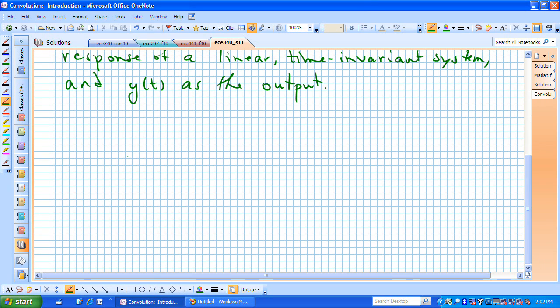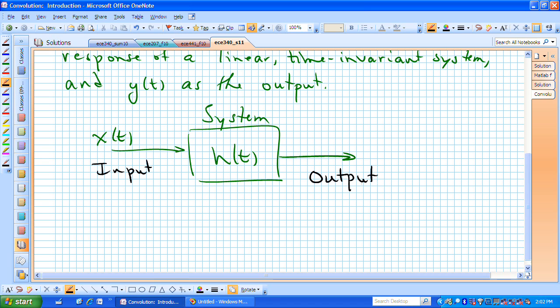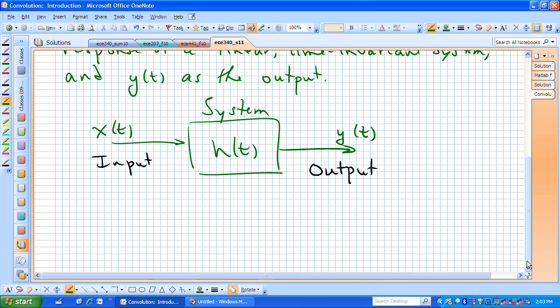As a picture of that, we can view a system which we're now describing by its impulse response, h of t. We have an input that's applied to that, which we're calling x of t, and that input, when applied to a system that has an impulse response h of t, will produce a particular output response y of t.